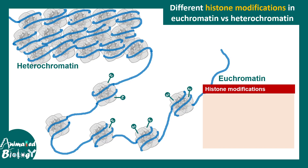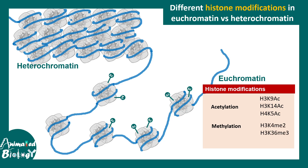When it comes to euchromatin, several histone modifications are associated with an open chromatin state. Acetylation, especially at H3 and H4 residues — such as H3K9 acetylation, H3K14 acetylation, and H4K acetylations — are very prominent. Methylation like H3K36 methylation and H3K4 dimethylation, as well as phosphorylation like H3S10 phosphorylation, are also common in euchromatin regions.